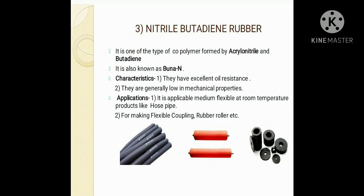The second property of BUNA-N is that it is generally low in mechanical properties, showing the lowest mechanical properties compared to the previous two synthetic rubbers. Its applications include making products that require medium flexibility at room temperature, such as hose pipes, different types of flexible couplings, and rubber rollers.